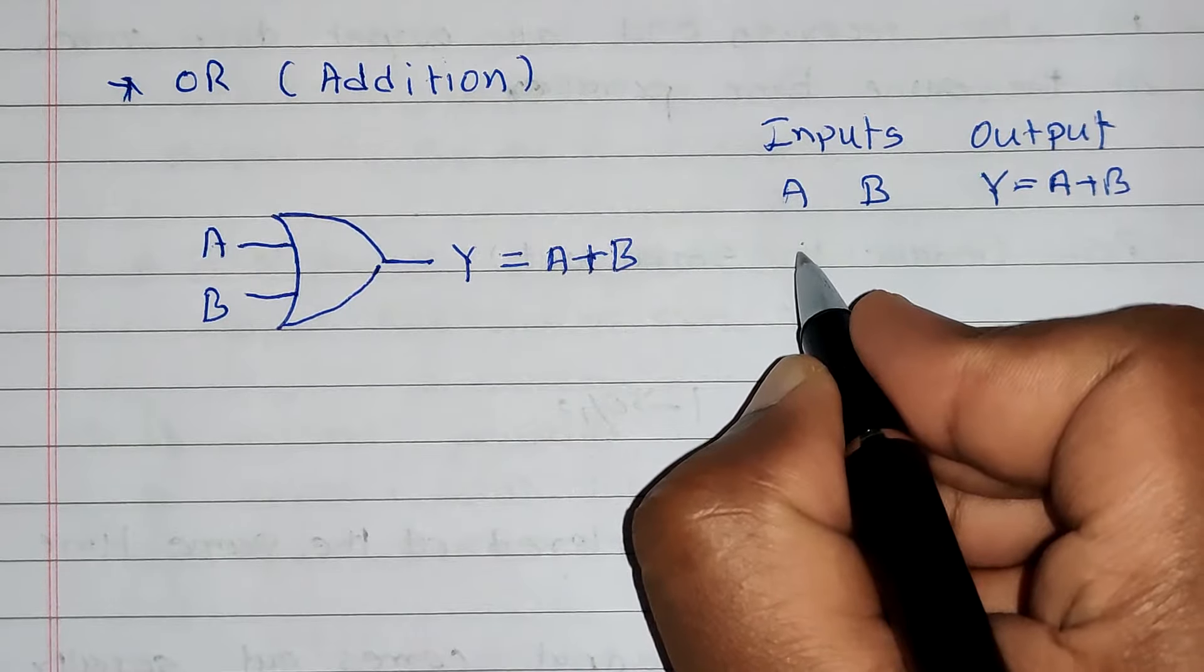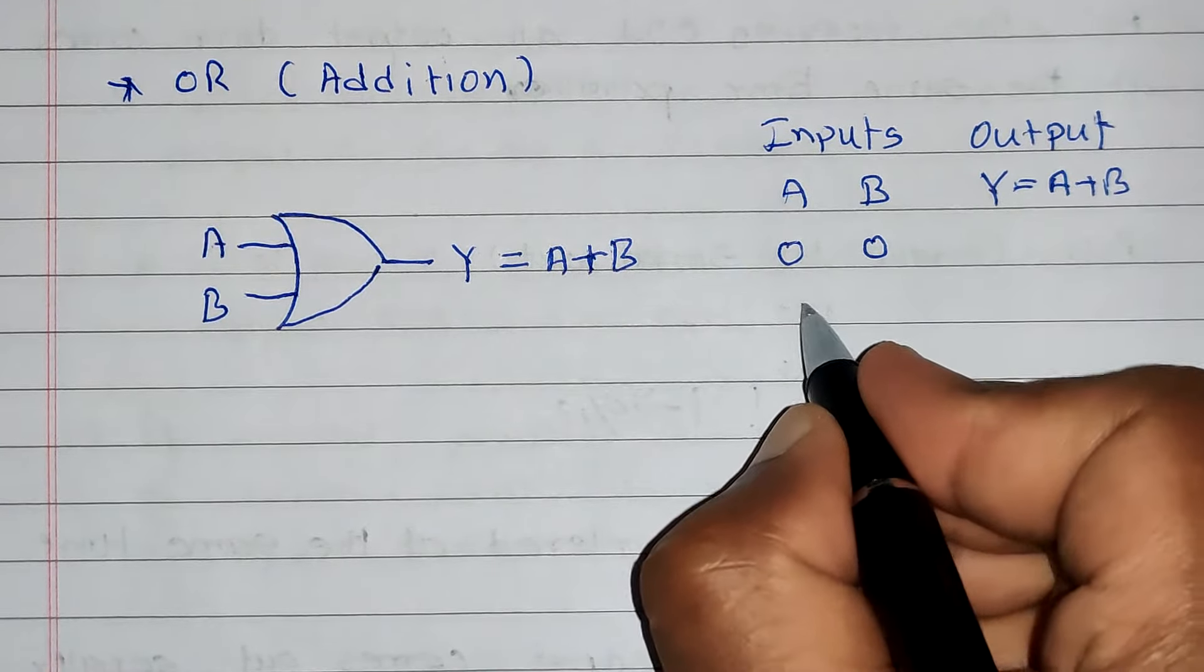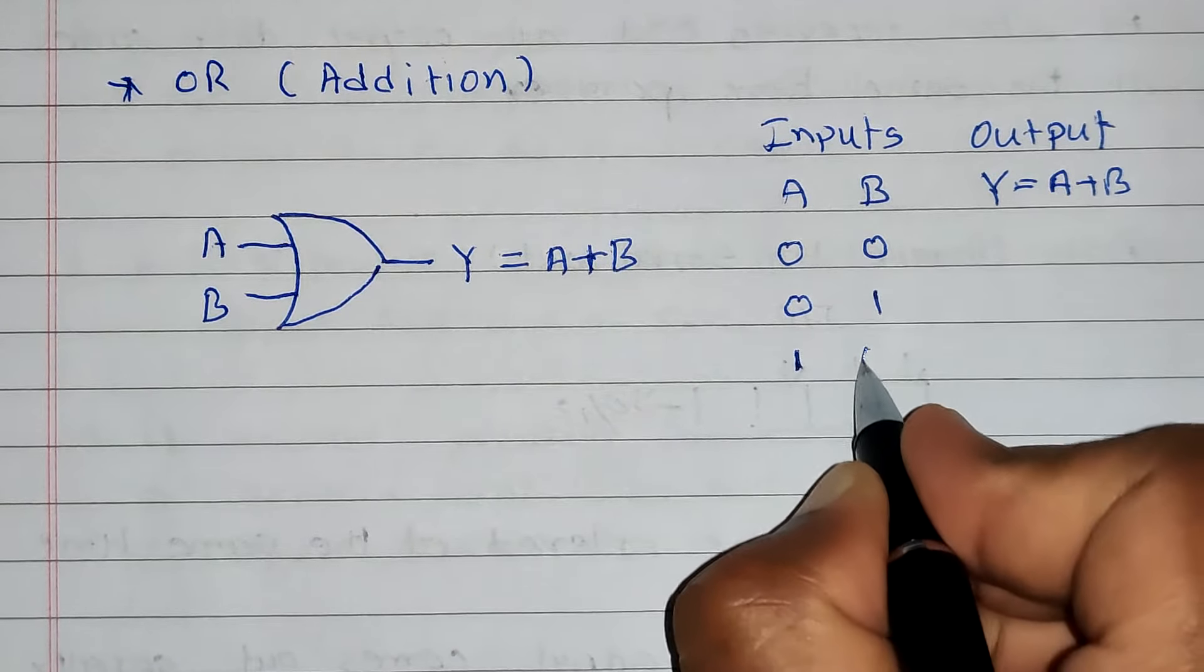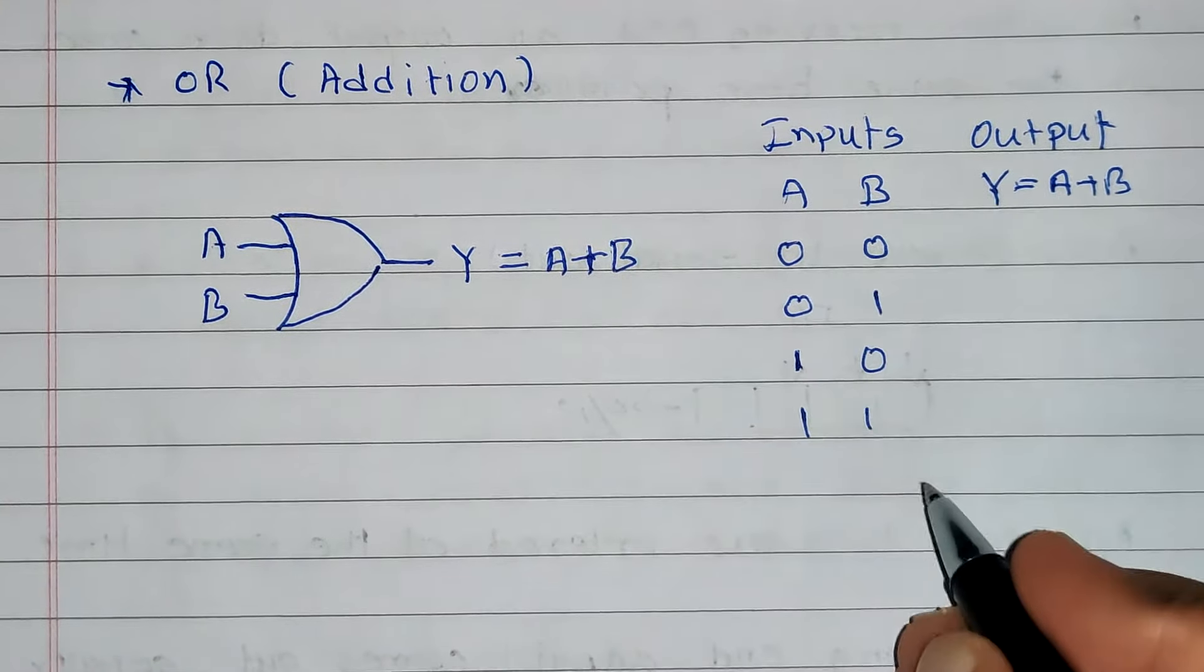Now, how many possibilities of inputs are there? Four: either A, B both will be 0, or 0 1, or 1 0, or 1 1. So these are distinct input possibilities.